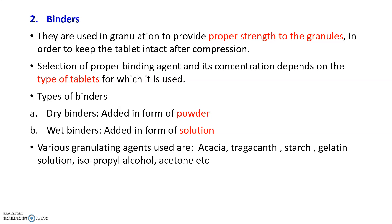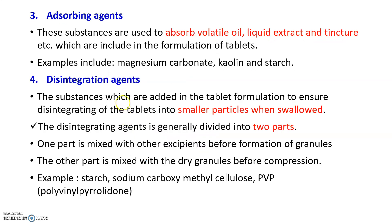Granulating agents used in tablet manufacturing include acacia, tragacanth, starch, and gelatin solution. Adsorbing agents: certain substances used in tablets such as volatile oils, liquid extracts, or tinctures are liquid in nature, which is problematic in tablet formulation, so they need to be adsorbed onto certain materials. Magnesium carbonate and kaolin starches are some adsorbing agents used when volatile oils, liquids, or tinctures are incorporated in manufacturing of tablets.